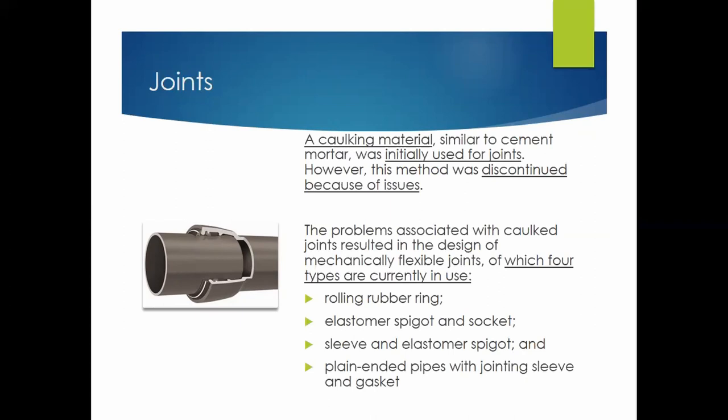The four types of joints currently in use are rolling rubber rings, elastomer spigot and sockets, sleeve and elastomer spigot, and plain ended pipes with a jointing sleeve and a gasket.